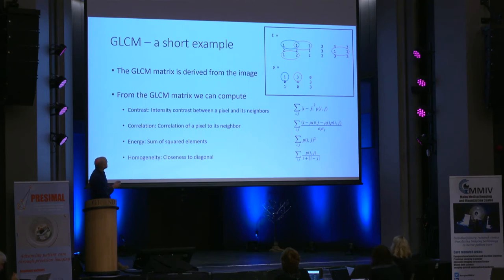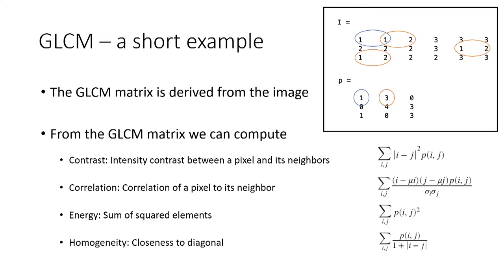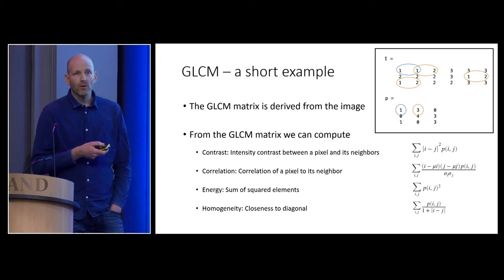From this matrix, you typically compute parameters like contrast (reflecting intensity contrast between pixels and their neighbors), correlation of a pixel to its neighbor, the sum of squared elements, and homogeneity (closeness to the diagonal). There are many more such variables. These names are meant to convey interpretation of the parameter, and each formula produces one value that feeds into the feature vector.